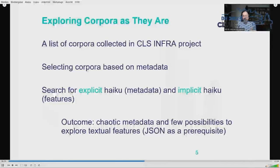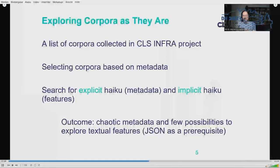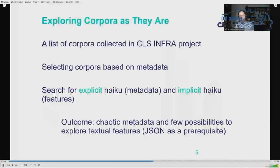We actually developed an algorithm to extract three-line poems from the Deutsches Lyrik Korpus, the corpus of German lyric poetry. In the DLK, verses and syllables are already marked in JSON, which makes it possible to count syllables and thus provides an additional criterion for identifying possible haiku. However, the ideal structure of 17 syllables divided 5-7-5 could not always be identified.